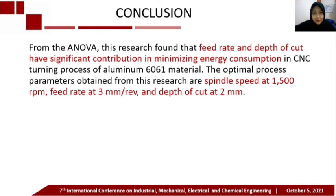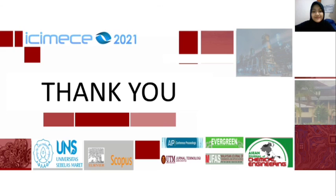From the ANOVA, this research found that feed rate and depth of cut have the most significant contribution to minimizing energy consumption in the CNC turning process of aluminum 6061 material. The optimal process parameters obtained from this research are spindle speed at 1,500 rpm, feed rate at 3 mm per revolution, and depth of cut at 2 mm. Thank you!